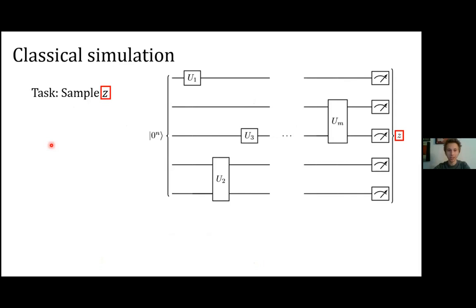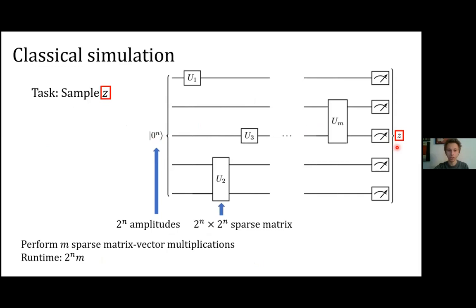This talk is about classical simulation. The most basic type of classical simulation task involves being given some input state and a quantum circuit, with the goal of sampling from the output distribution. You can always do this classically by representing the input state as a vector with two-to-the-n entries, and treating each unitary gate as a sparse matrix, performing sparse matrix-vector multiplications through the circuit. This gives a runtime scaling like two-to-the-n times the number of gates, which is pretty inefficient.